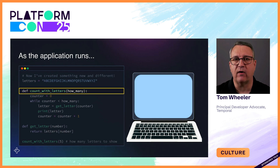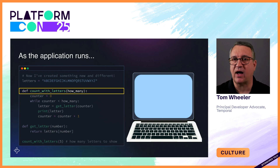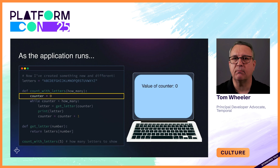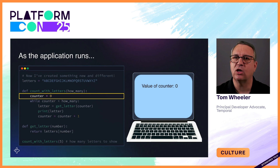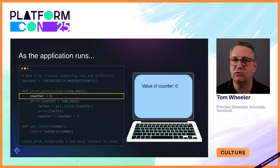Since it was called with a value of five, it will output a sequence of five letters: A, B, C, D, and E. The program declares a variable that keeps track of the count — its value is initially zero but will change as the program runs. The laptop screen on the right will show its current value and the output from this program as I step through the code.